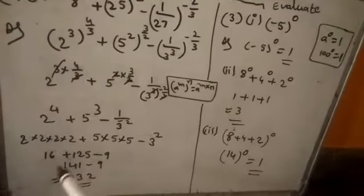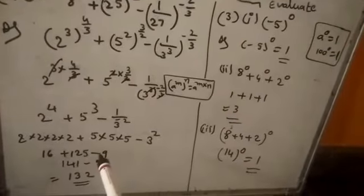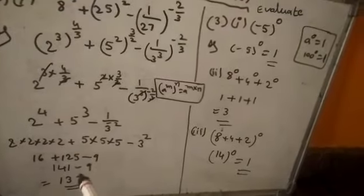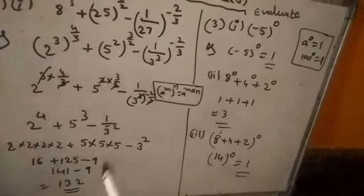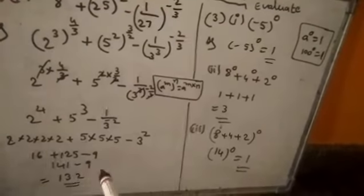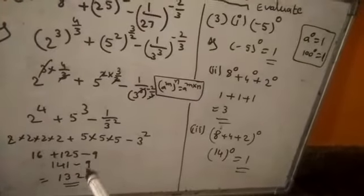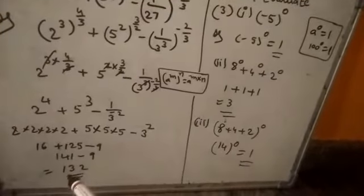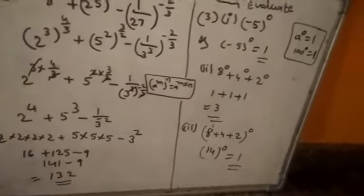So next: 16 plus 125 equals 141, minus 9. We should do subtraction: 141 minus 9 equals 132.